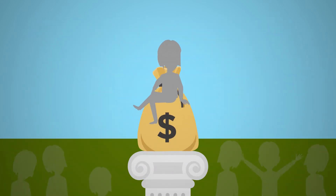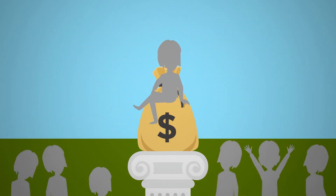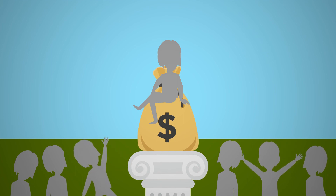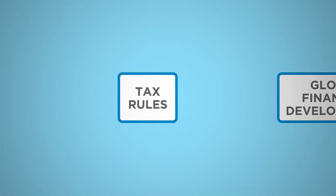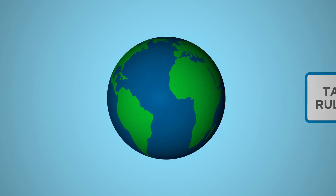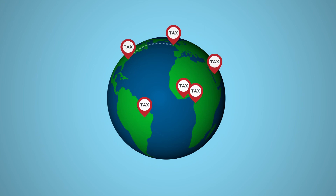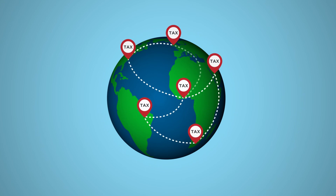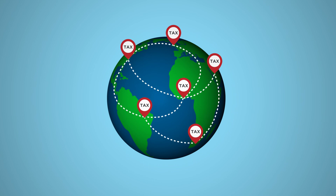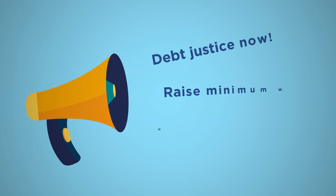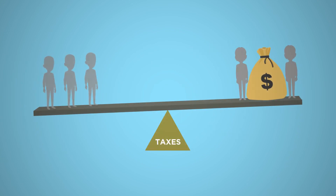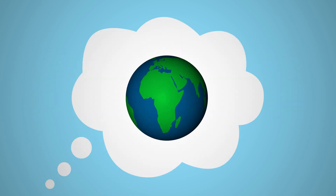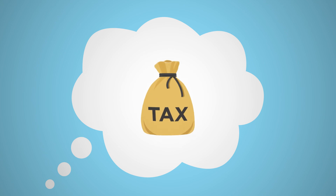This keeps the rich rich, but also prevents poorer people from accessing the services they need. The rules of the tax game have not kept pace with global financial developments, and something needs to change. Tax has long been a crucial tool for building a fairer world, both within and between countries. But what we demand of our governments determines whether taxes help alleviate inequality or make it worse. How do you think we can use tax to build a fairer world?